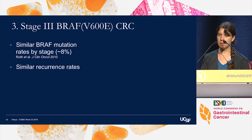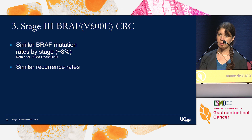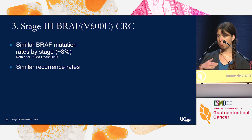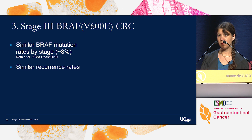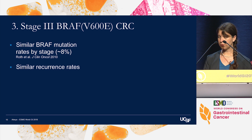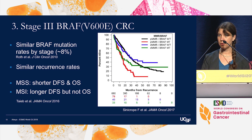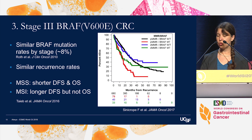Regarding BRAF V600E in stage 3 colorectal cancer: unlike microsatellite instability, which has an increased incidence in early stage compared to metastatic colorectal cancer, there is a similar rate of BRAF mutations by stage at about 8% across stages. The rate of recurrence after stage 3 BRAF wild-type and V600E-mutated colorectal cancer is similar. However, among patients with BRAF V600E microsatellite-stable colorectal cancers whose stage 3 tumors do recur, there is an associated shorter disease-free interval and markedly decreased overall survival after recurrence.